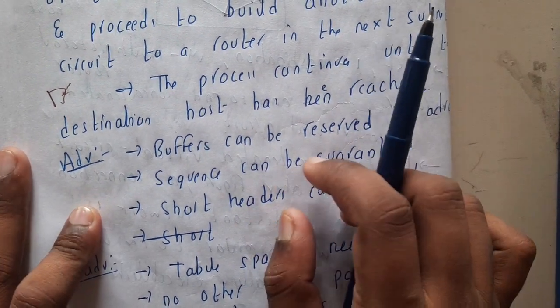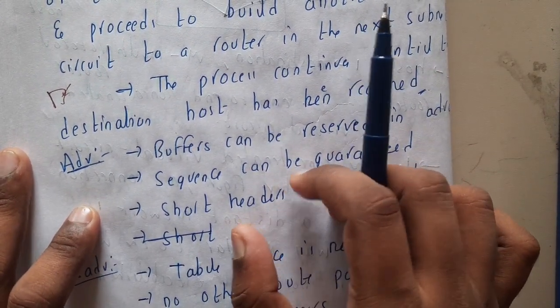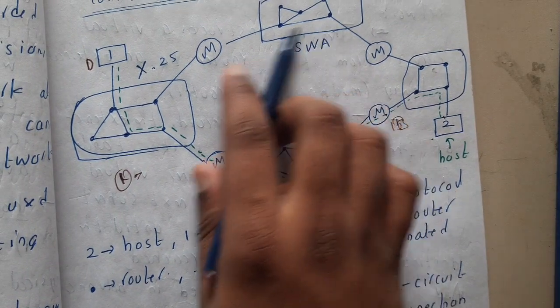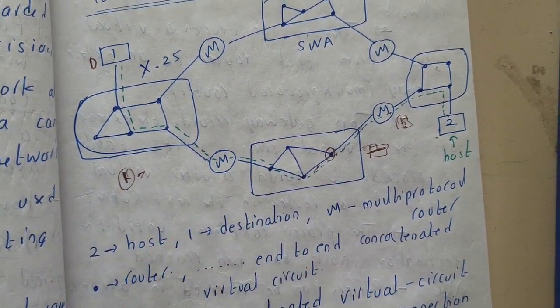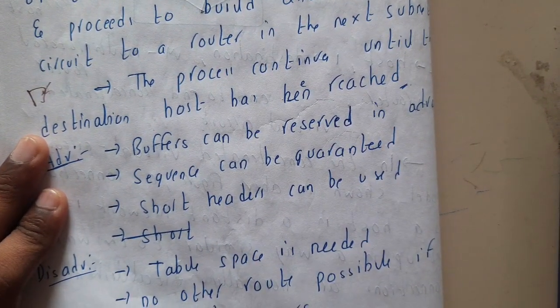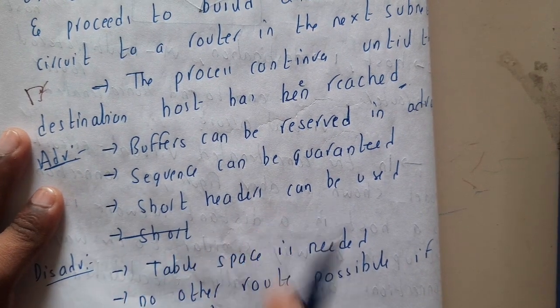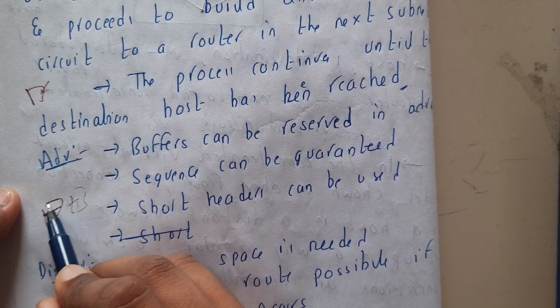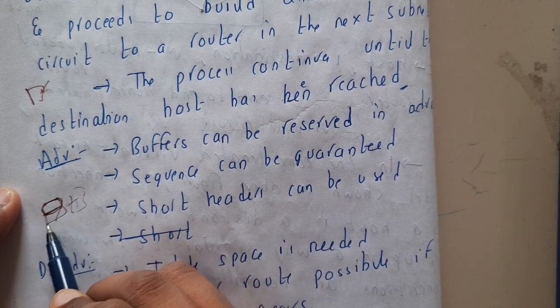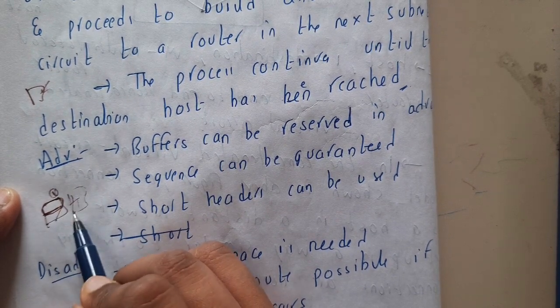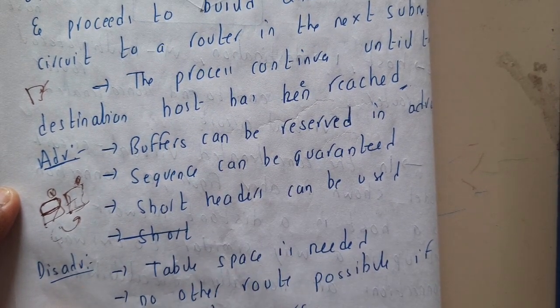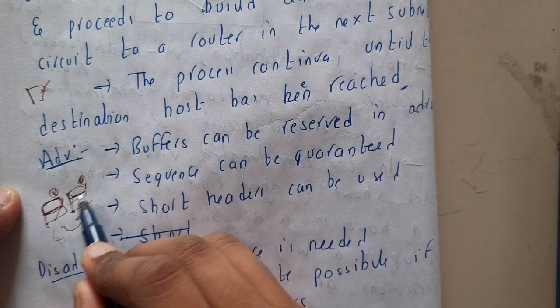Sequence can also be guaranteed, since packets travel one after another along a single path with no chance of shuffling or swapping. Although multiple paths exist in the diagram, only one best path is selected. Additionally, short headers can be used — since packets travel in sequence, you only need to number them (e.g., 1, 2, 3), avoiding the need to repeat full header information, which saves space.